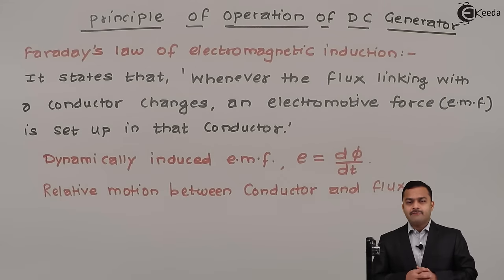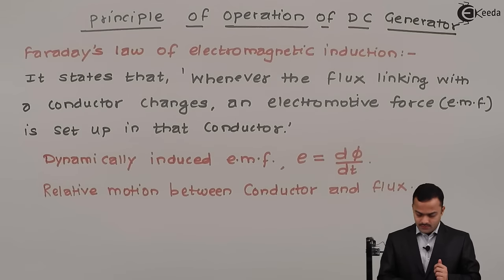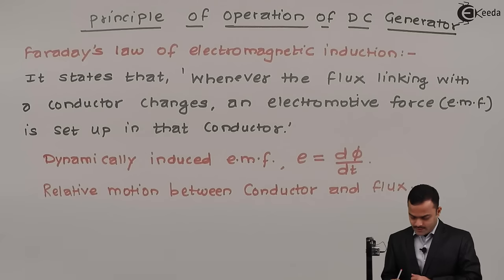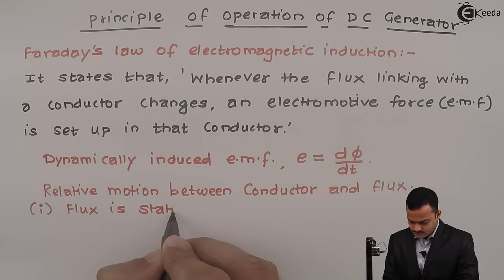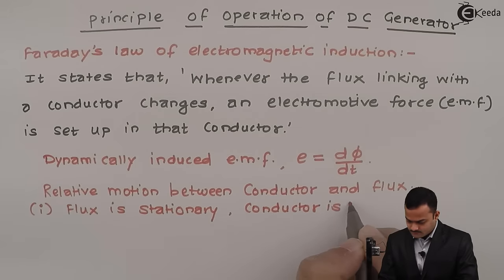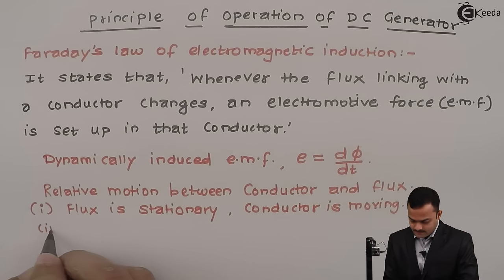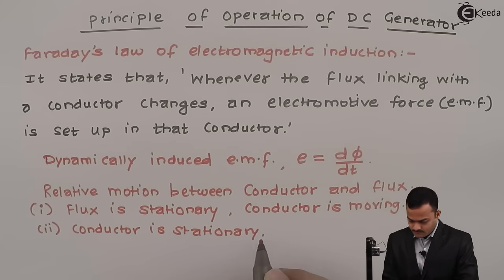Relative motion can be achieved in two ways. First, I will keep flux stationary and conductor moving. Or in the second case, I will keep the conductor stationary and flux moving. So relative motion can be obtained by two ways: in the first case, flux is stationary and conductor is moving; in the second case, conductor is stationary and flux is moving.